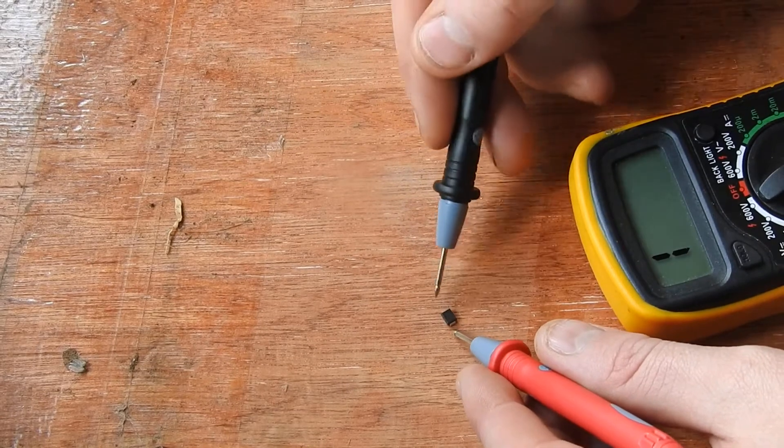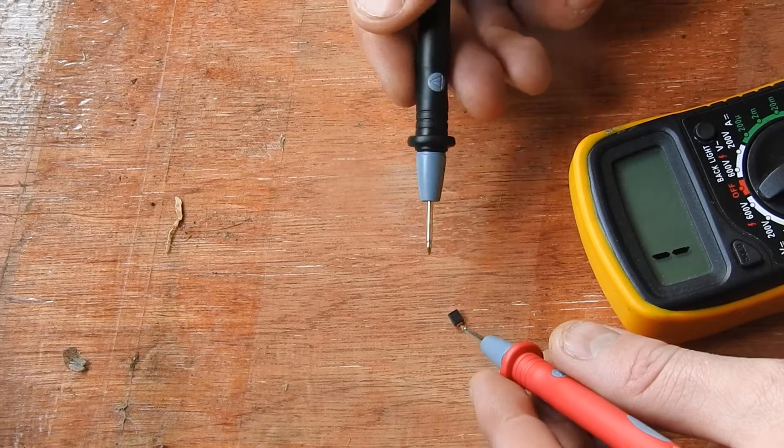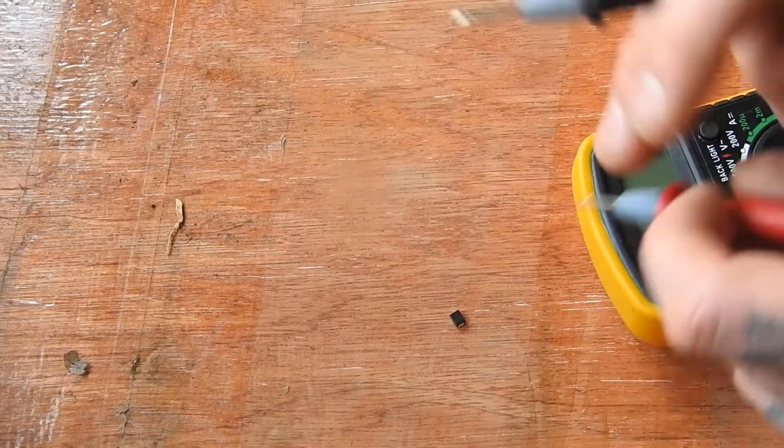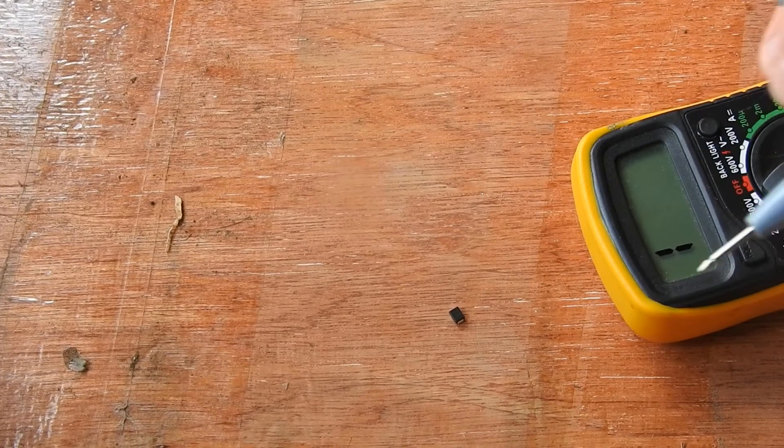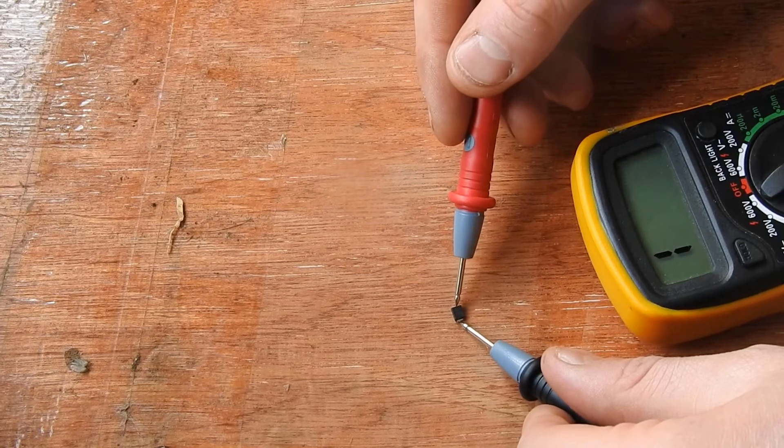That means that's the positive side and that's the negative side. The lead positions tell you the polarity - if the positive is touching that side and negative is that side, that means it's the same. But if we turn it around like this, nothing will happen.